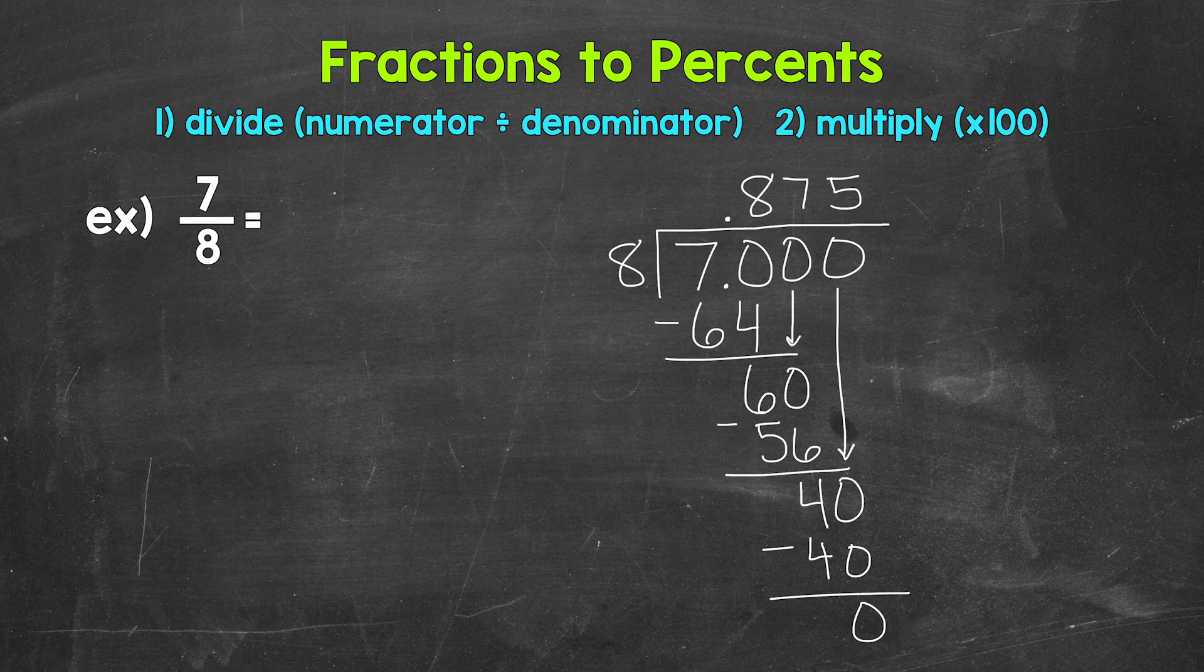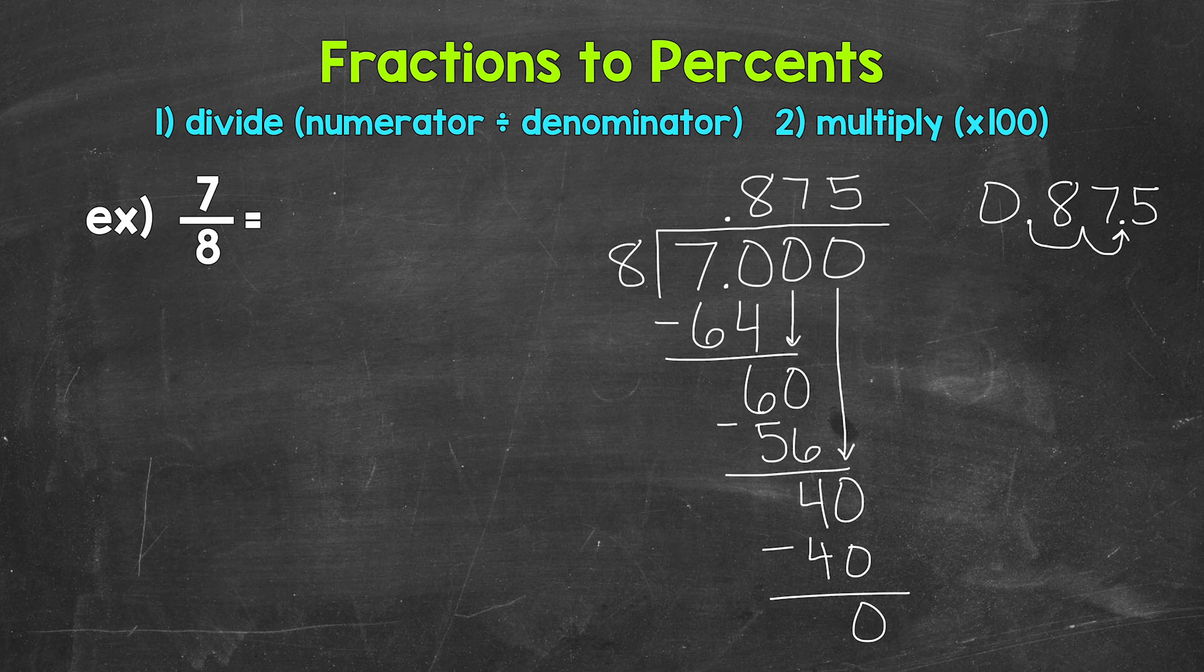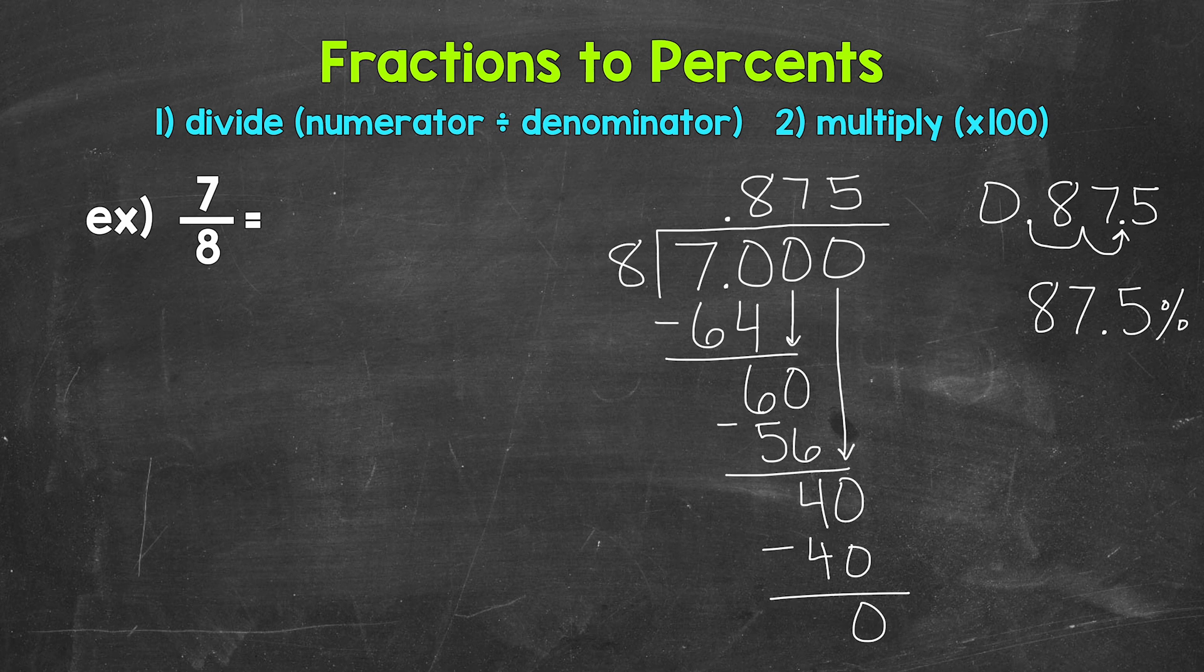7 eighths equals 875 thousandths. Now we need to convert this decimal to a percent by multiplying it by 100. And again, we can multiply this by 100 by moving the decimal twice to the right. So let's rewrite our decimal off to the side here and move the decimal once, twice to the right. This gives us 87.5 percent. So 7 eighths equals 87.5 percent.